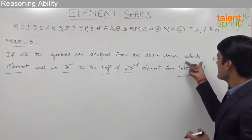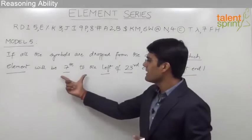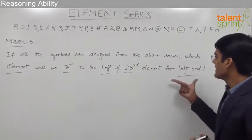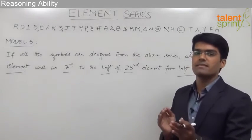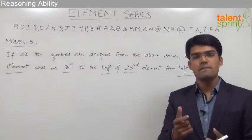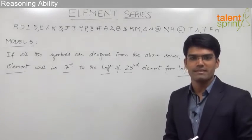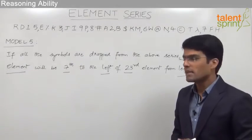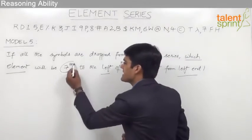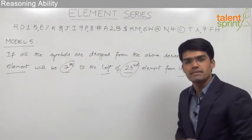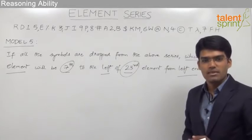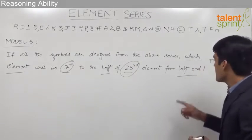The question here is which element will be 7th to the left of 23rd element from the left end. As we discussed in the previous model, whenever there is a left and left combination, the difference of two positions should be considered to get the required element. The two positions here are 7th and 23rd, and the difference of these two positions is 16. So we need to take the 16th element from the left end, as left end is specified in the question.